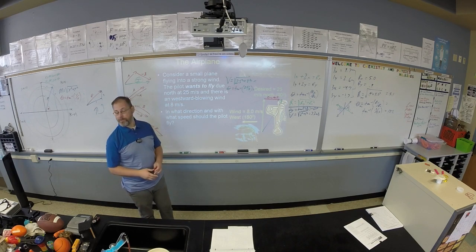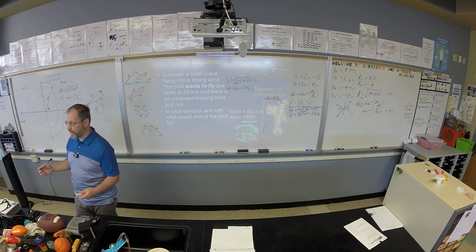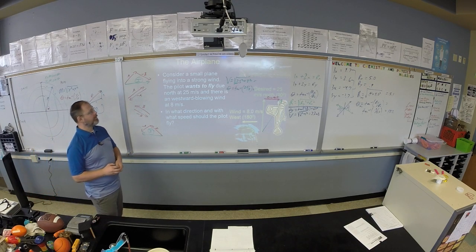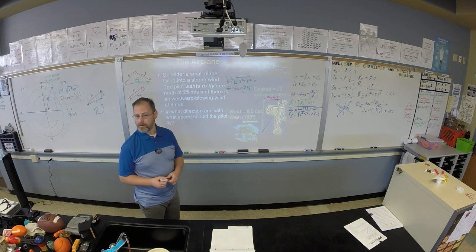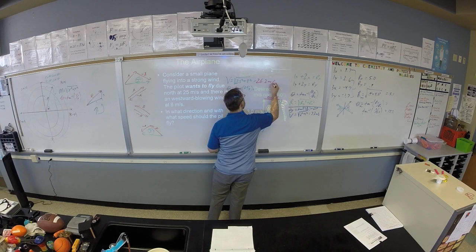So to get the magnitude of your velocity, make the 25 and the 8 legs of a right triangle, and how fast should you fly? 26.2? Take your word for it. 26.2 meters per second.